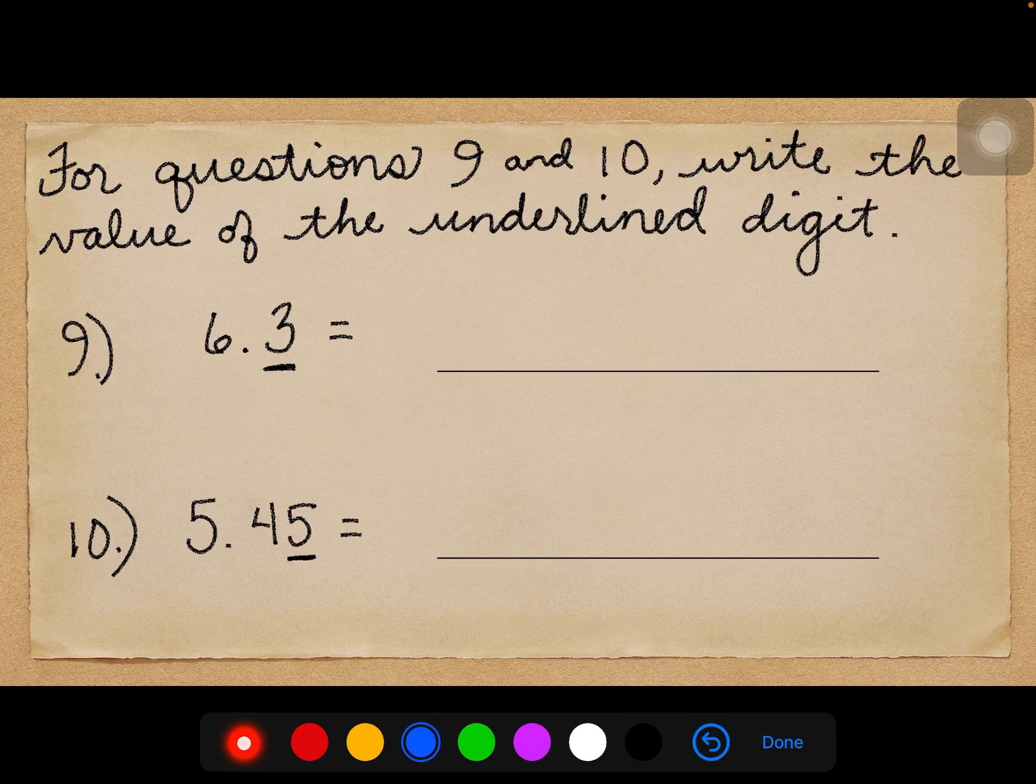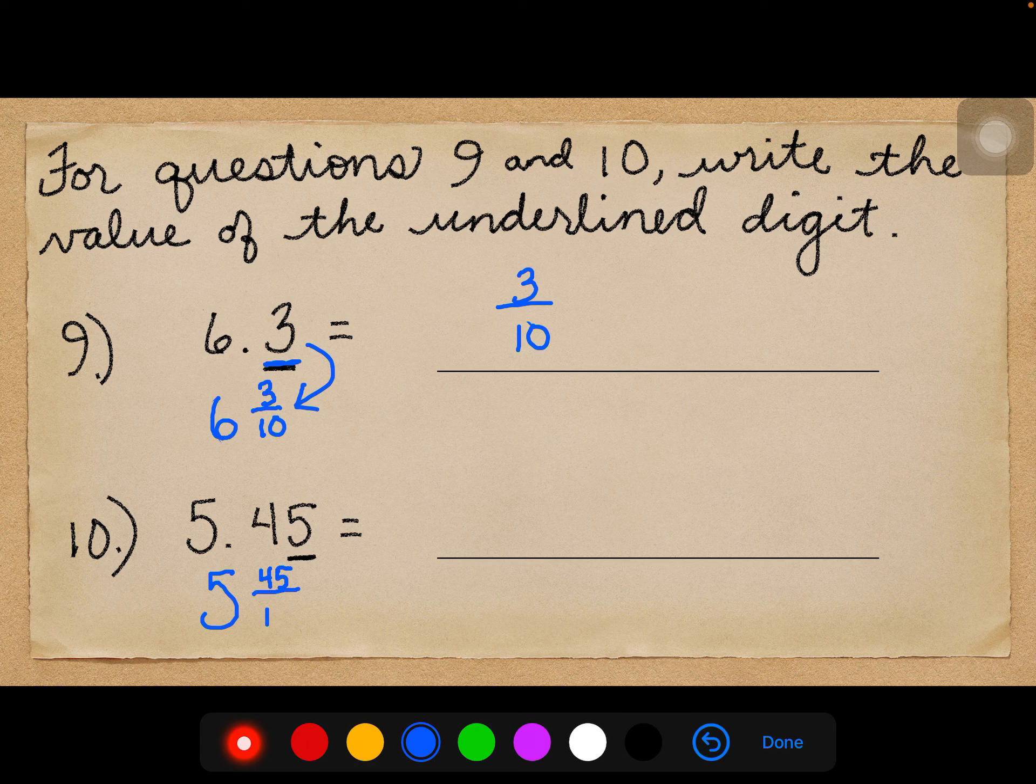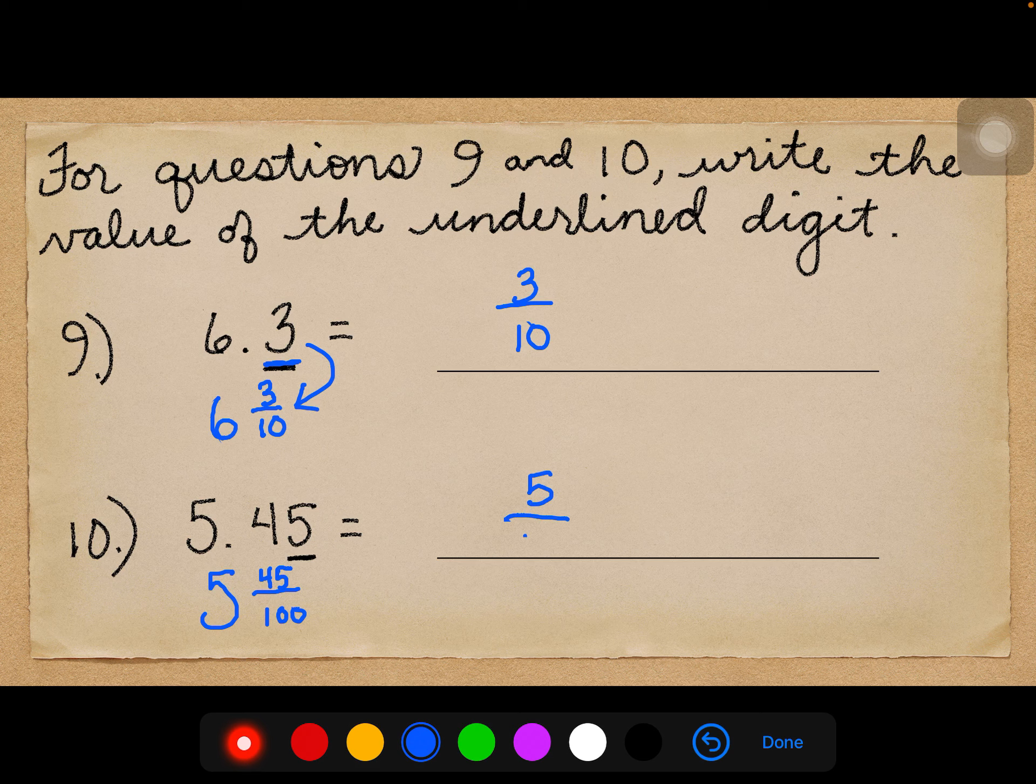For question number 9 and 10, write the value of the underlined digit. Now, we just did this in number 6, so I want to do the same thing here. We have a 6 as a whole number, and this says 3 tenths. So that decimal is equivalent to the fraction 3 tenths. The value is 3 tenths. Number 10, we have a whole number of 5, and we have 45 hundredths. So the value of the 5 is 5 hundredths. Okay? And I have not forgotten the clues. I'm doing something a little different today.